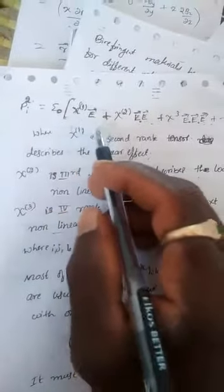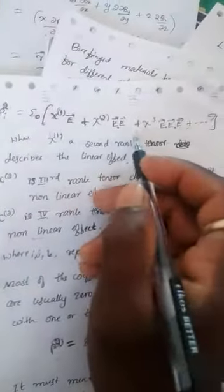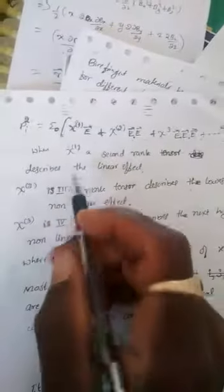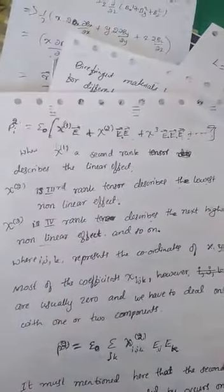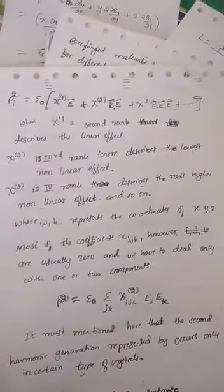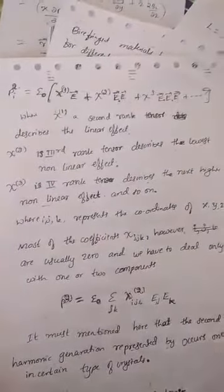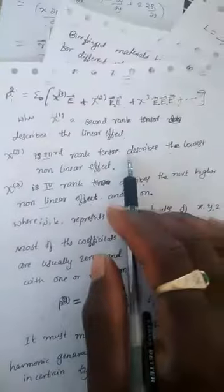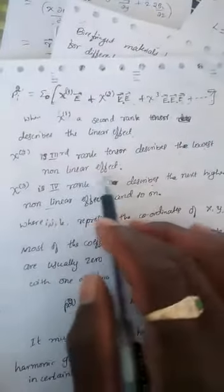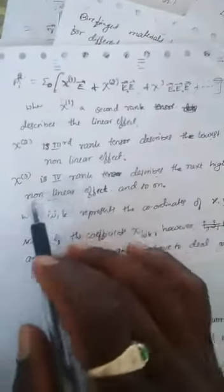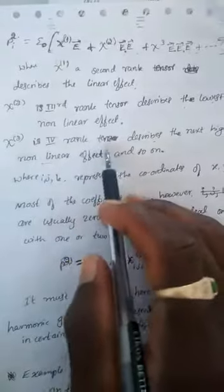The polarization is written as P = ε₀(χ¹·E + χ²·E² + χ³·E³ + ...), where χ¹ is a second rank tensor describing linear optics, χ² is a third rank tensor describing the lowest nonlinear effect, and χ³ is a fourth rank tensor describing the next higher order nonlinear effects.